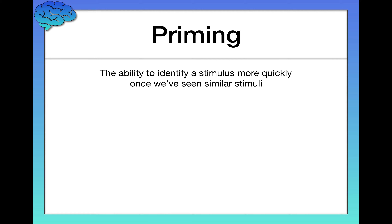Finally, priming. Priming in its truest sense is the ability to identify a stimulus more quickly once you've seen similar stimuli — and it's implicit because you might not even know it's happening. Psychologists have adopted priming into all sorts of studies, for example posting pictures of smiling or frowning people on a wall to prime people to be happier or less happy and observe behavioral changes.